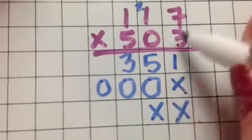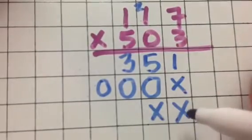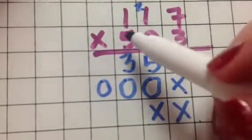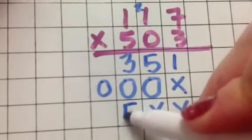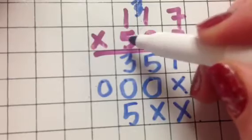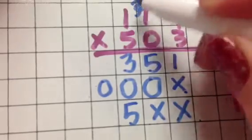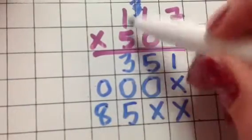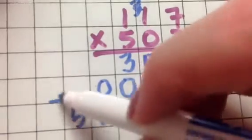Now, since I'm jumping over to the 5, I have to put in 2 placeholders, right? 5 times 7, 35. 5 times 1 is 5, plus 3, 8. 5 plus 1 is 5. And now I can, as you can see, easily add all of these together.